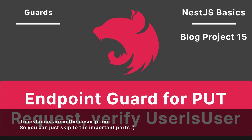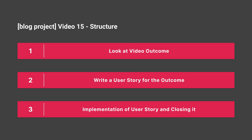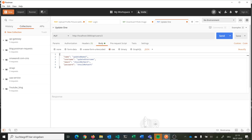Hi and welcome back to video 15. This time we are dealing with guards and we are making an endpoint guard for a PUT request, especially for updating a user's profile, to verify that the user who is trying to update a profile is actually the user himself, so that you are not allowed to update the profile of a different user than yourself. Our video structure is as always: first we look at the video outcome, then we write a user story, then we implement it and close it.